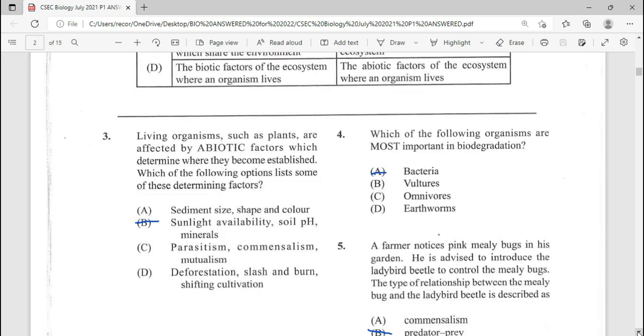Number three, living organisms such as plants are affected by abiotic factors which determine where they become established. Which of the following option lists some of these determining factors? B is our answer there.